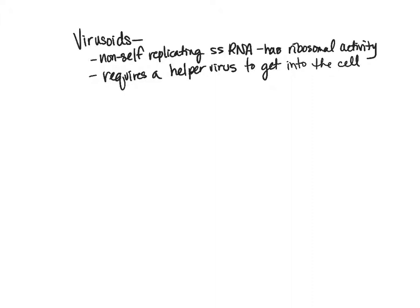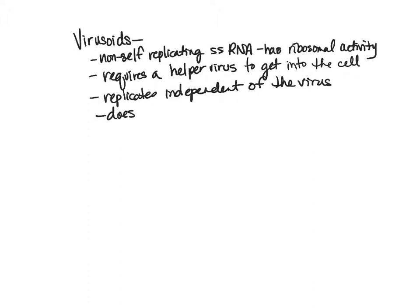Virusoids replicate independent of the helper virus once inside the cell. They do not code for proteins — they are just single-stranded RNA making many copies of that single-stranded RNA. And they can cause problems as well.